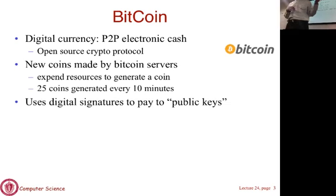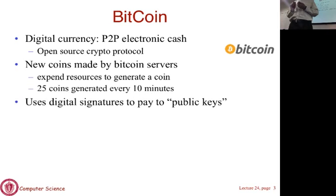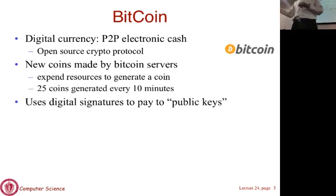Bitcoin is anonymous, and as a result it has seen more use for illegitimate purposes than legitimate ones, though some merchants do accept it. PayPal is an example of electronic payments where you don't reveal your credit card information to the party you're paying — a trusted third party intermediates for you. PayPal bills you and transfers the money, acting more like a money transfer service, useful when you don't trust a random merchant with your credit card.